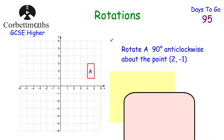Our topic today is rotations. We're going to look at how to do two rotations — I've got two rotation questions. With this being rotations, it might be easier to print the practice questions and use those as practice today. After the two rotations, we have a question where there's been a transformation and we've got to describe it. So here we've got a grid with rectangle A, and we've been asked to rotate A 90 degrees anti-clockwise about the point 2, negative 1.